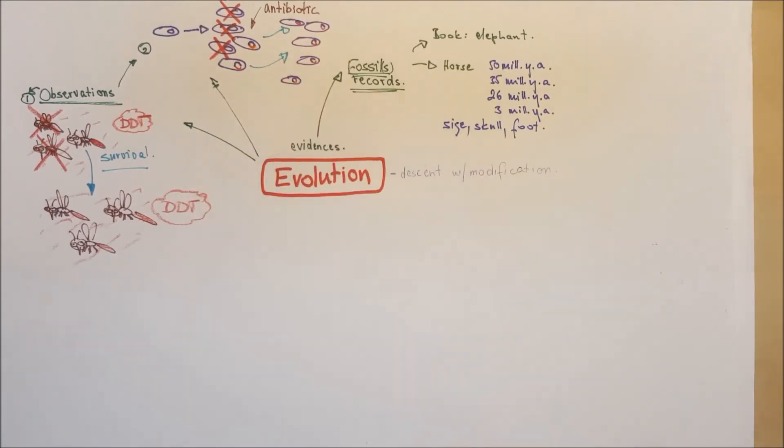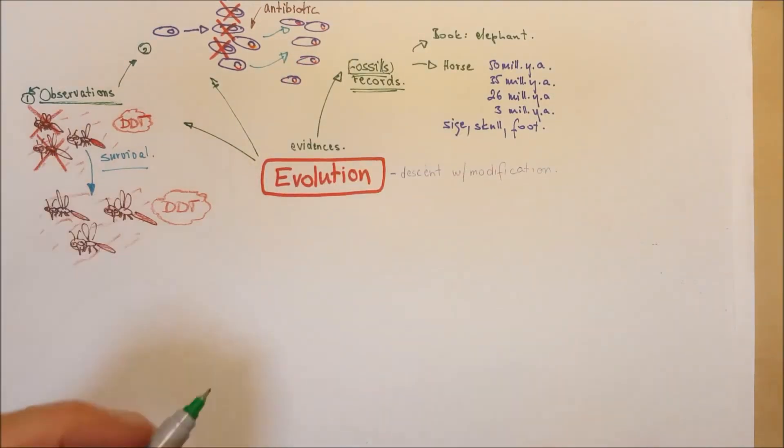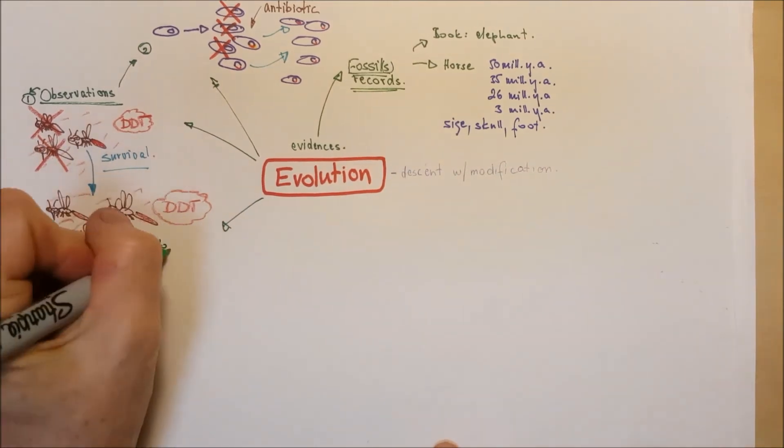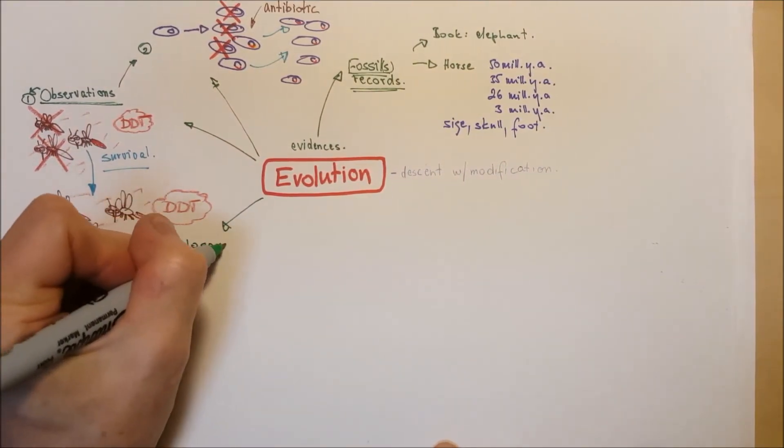The book brings up the example for the elephants. The third evidence for the evolution is homologous structures.